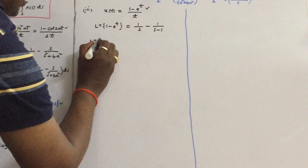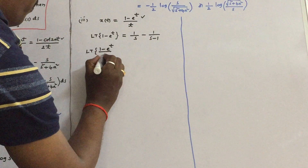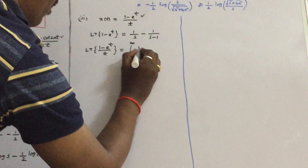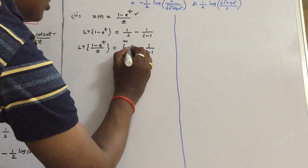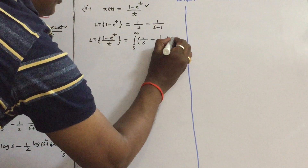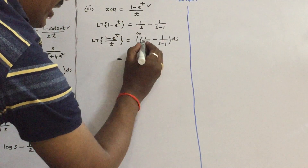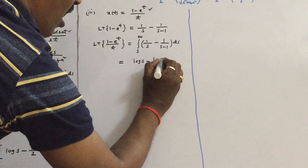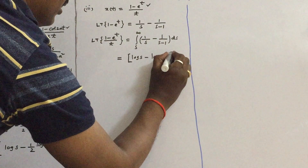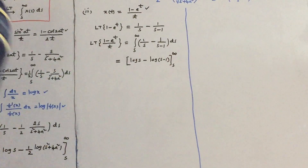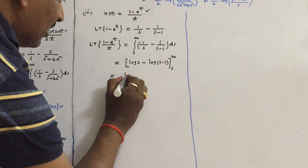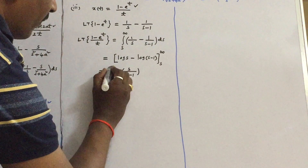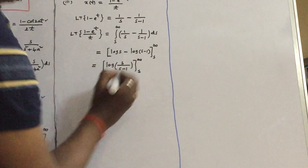Applying the division by T property, the Laplace transform of (1 minus e^T) by T equals the integral from S to infinity of [1/S minus 1/(S−1)] dS. Integrating, the first term gives log S and the second term gives log(S−1), with limits S to infinity. Applying log A minus log B equals log(A/B), this becomes log[S/(S−1)] from S to infinity.